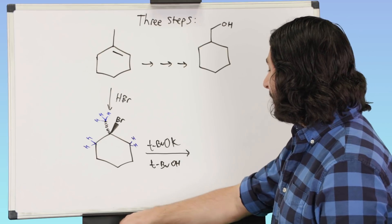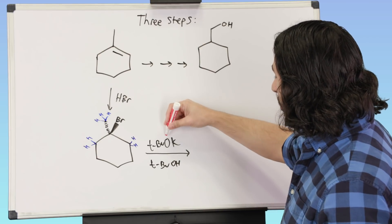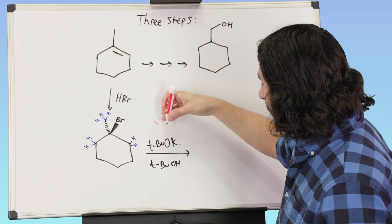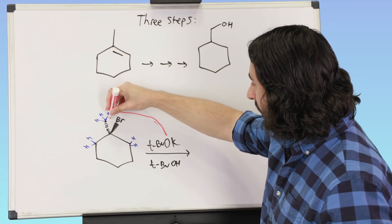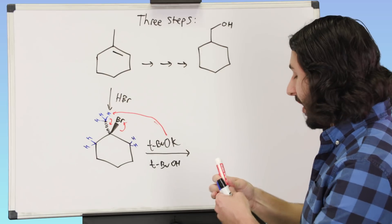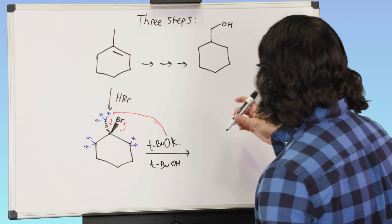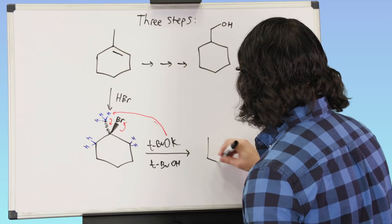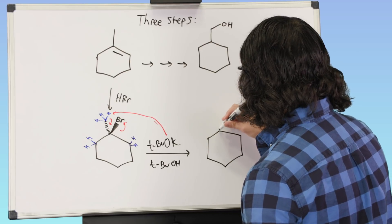Tert-butoxide is preferentially going to grab one of these guys and do E2 that way, and so that is what is going to get us to here.